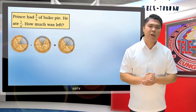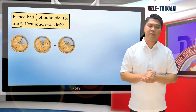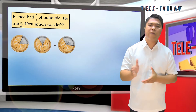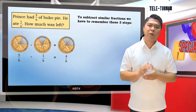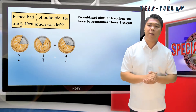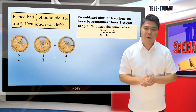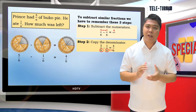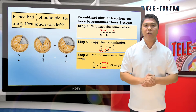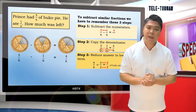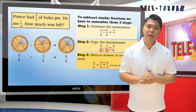Let's now proceed to subtraction of similar fractions. Prince had 5 sixths of a pie. He ate 1 sixth. How much was left? 5 sixths minus 1 sixth is equal to 4 over 6. Step 1: subtract the numerators — 5 minus 1 is 4. Step 2: copy the denominator — their denominator is 6 — that gives us 4 over 6. Step 3: reduce the answer to lowest term — 4 divided by 2 is 2, and 6 divided by 2 is 3. So, 5 sixths minus 1 sixth is 2 thirds.